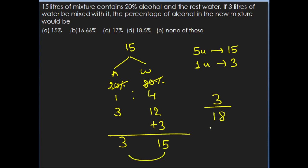The question asks the percentage of alcohol in the new mixture. Alcohol is 3 units out of the total mixture which is 15 plus 3 equals 18 units. So 3 by 18 — on simplifying, 1 upon 6 — this is nothing but 16.66%. Therefore option B will be the answer.